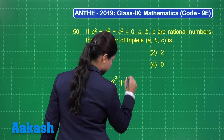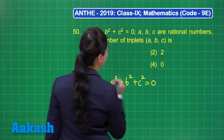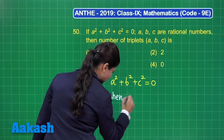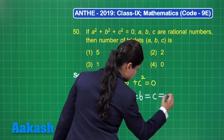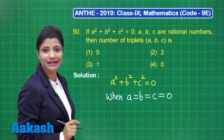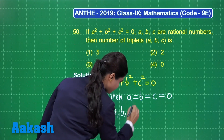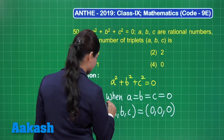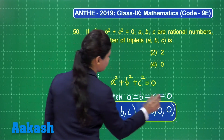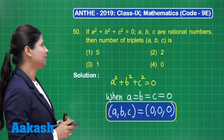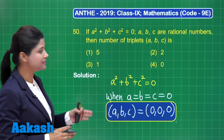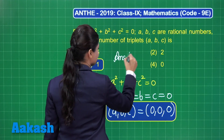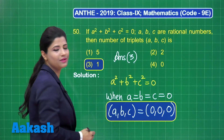If a squared plus b squared plus c squared is equal to 0, this is possible only when a, b, and c are all equal to 0. So the only possible triplet for a, b, c is (0, 0, 0). We have only one possible triplet, so the number of triplets of a, b, c is 1 — present in option number 3. The answer for this question is option 3. I hope it is clear.